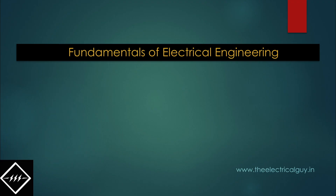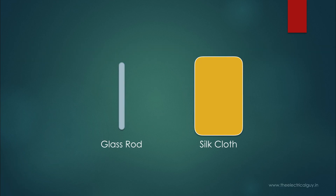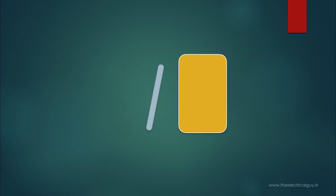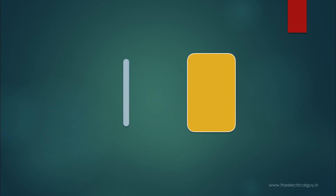To understand direct current, let's go right to the root — static electricity. When we rub a glass rod with a silk cloth, an exchange of electrons happens between these two. Now, if I place a copper wire between these two, electrons will actually start flowing. And this is what we call current.